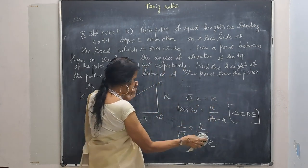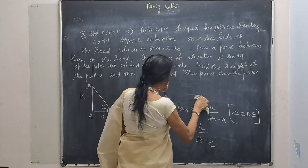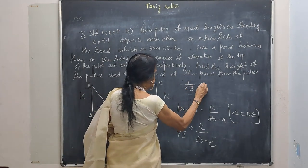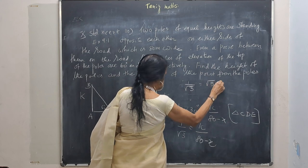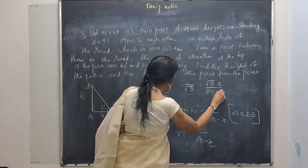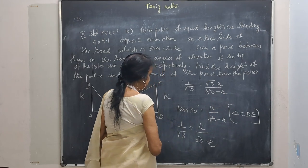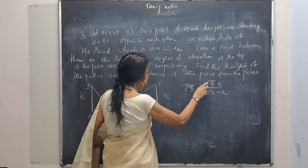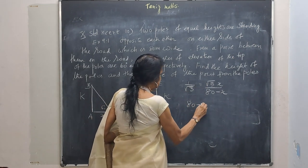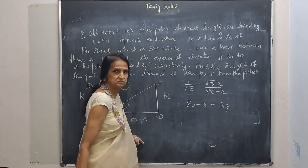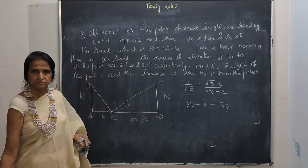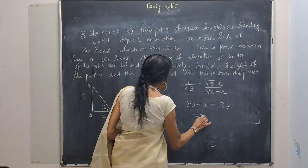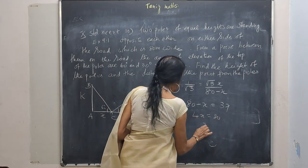K is root 3X. So 1 by root 3, K, take this here. So 80 minus X is 3X. 4X is 80. X is 20.